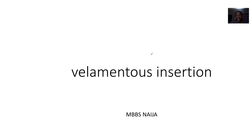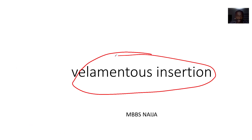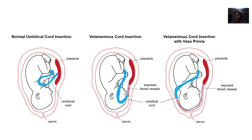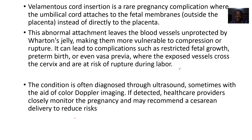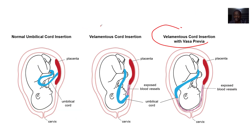We're talking about another complication of the umbilical cord — this is known as velamentous insertion, or velamentous cord insertion. This is a real pregnancy complication where the umbilical cord attaches to the fetal membranes outside the placenta instead of directly attaching to the placenta.